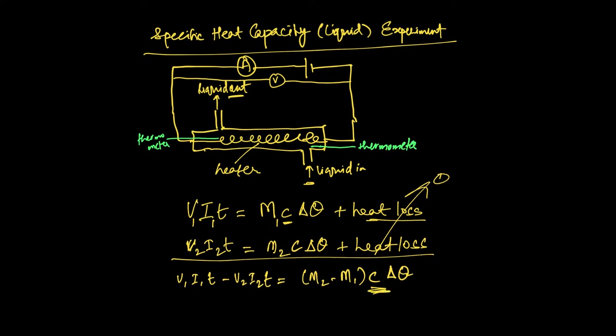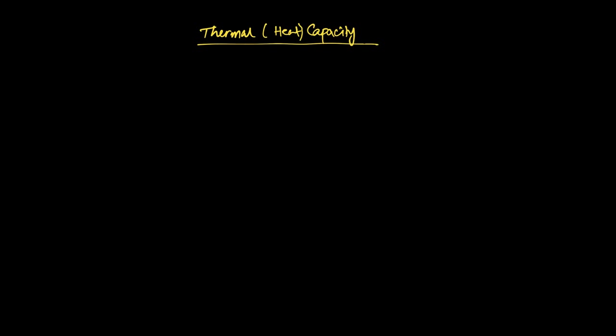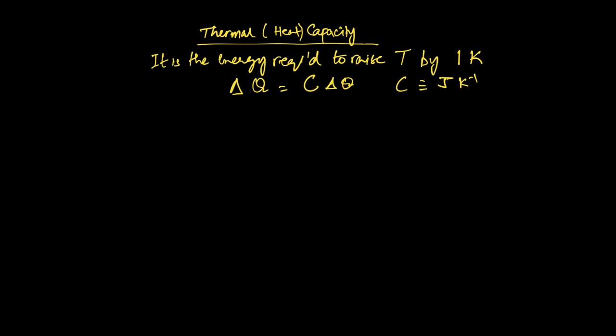One last thing before we end: specific heat capacity applies to a single substance, but objects are often made up of several different materials. Finding the heat energy change would require knowing the specific heat capacity and mass of every substance, which can be cumbersome. We can avoid this by using the thermal capacity of the whole object — the quantity of heat required to raise the temperature of the entire body by one degree. In this case delta Q equals capital C times delta theta, where C is expressed in joules per kelvin.